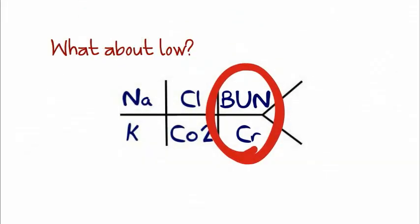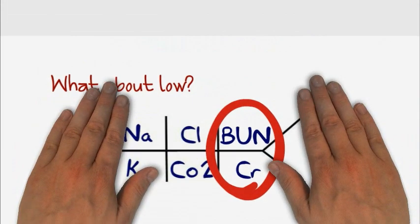And what about low? Well, we really don't worry about low because it's chronic and either overhydrated or liver disease. Acute is high.